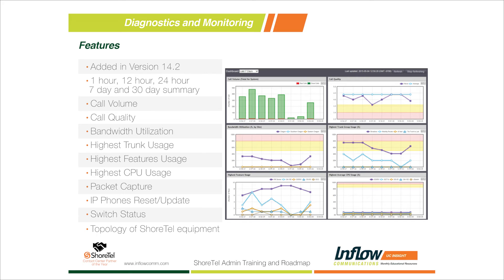Another nice addition to Diagnostic and Monitoring is the topology view. When you click topology, all the switches report back their default gateway, and the system builds a map based on which switches are in the same network. It builds out a topology based on WAN connections and all your different sites. For multi-site deployments it's a great visual — it shows green, yellow, or red indicators based on connectivity between sites and whether switches can communicate with the servers.